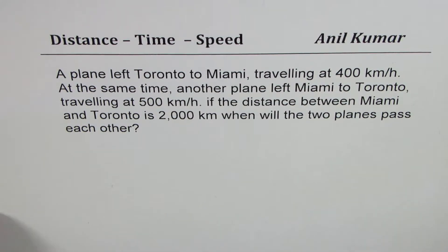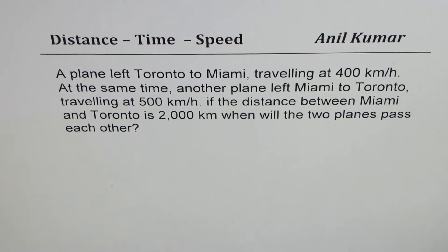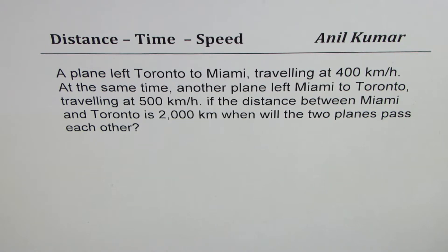I am Anil Kumar sharing with you the solution of a question from my subscriber Rhea. The question is: a plane left Toronto to Miami traveling at 400 km per hour. At the same time, another plane left Miami to Toronto traveling at 500 km per hour. The distance between Miami and Toronto is 2000 km. When will the two planes pass each other?